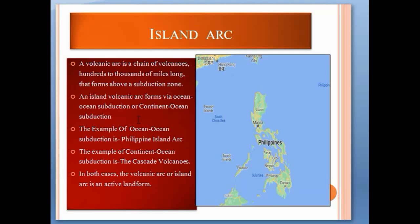A volcanic arc is a chain of volcanoes hundreds to thousands of miles long that forms above a subduction zone. An island volcanic arc forms via ocean-ocean subduction or continent-ocean subduction. The example of ocean-ocean subduction is the Philippine island arc, and the example of continent-ocean subduction is the Cascade volcanoes. In both cases, the volcanic arc or island arc is an active landform.